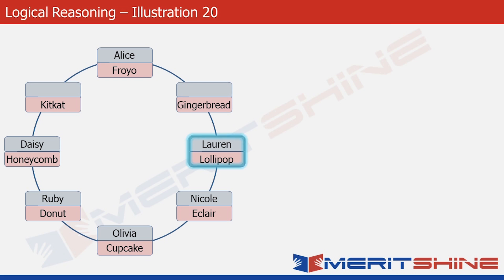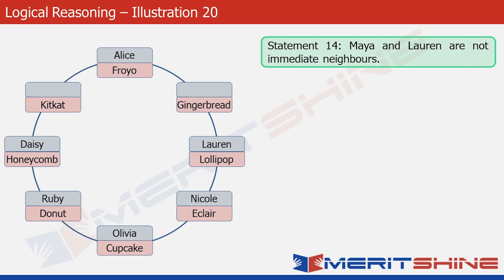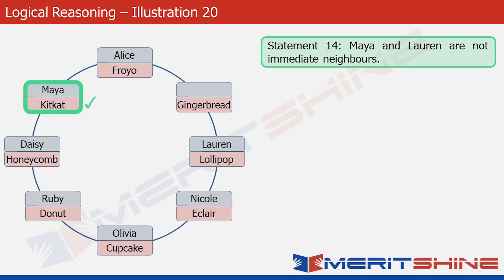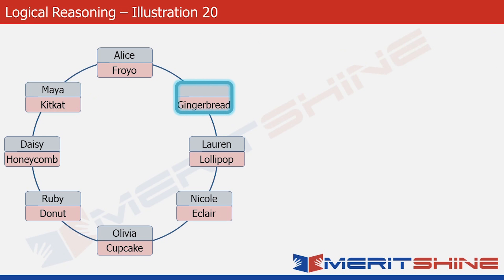Statement 14 says that Maya and Lauren are not immediate neighbors. There are just two positions where a girl's name is not written, and we know Lauren's position. So Maya cannot occupy the box adjacent to Lauren. Naturally, the other position becomes Maya's, and she is the one who uses KitKat. We're left with just one last box, and the only girl remaining is Katie. So let's put Katie there.